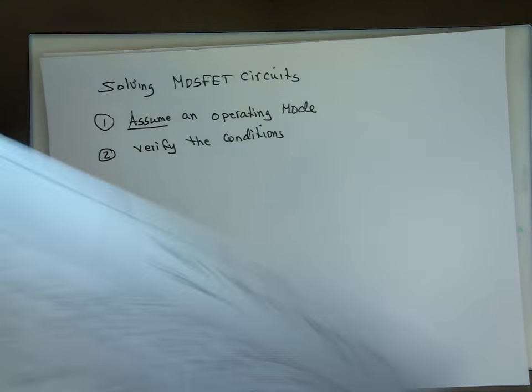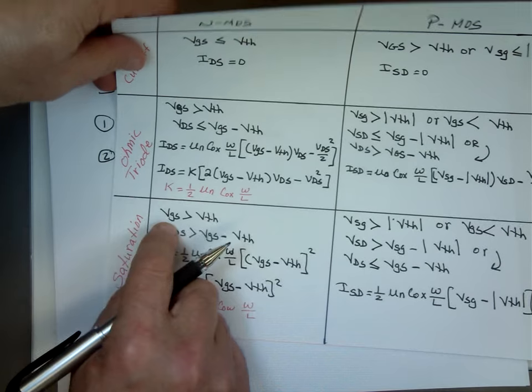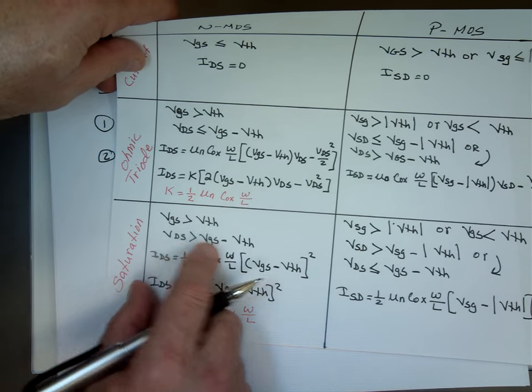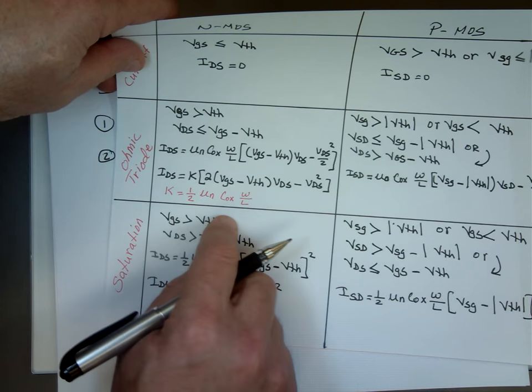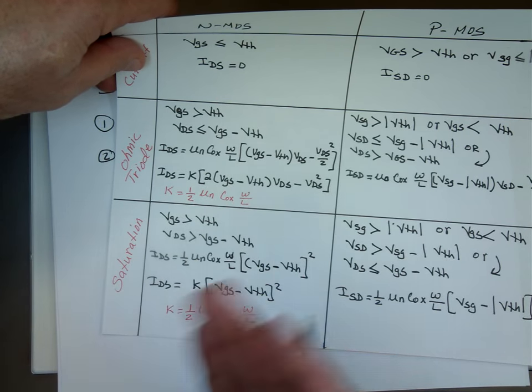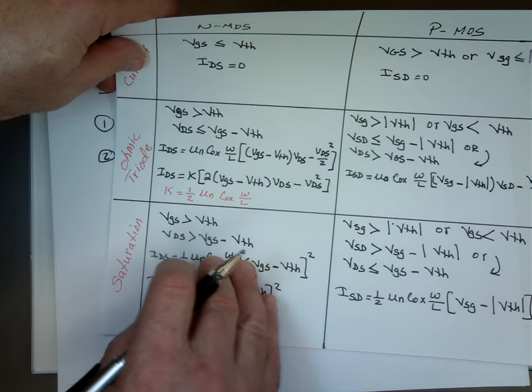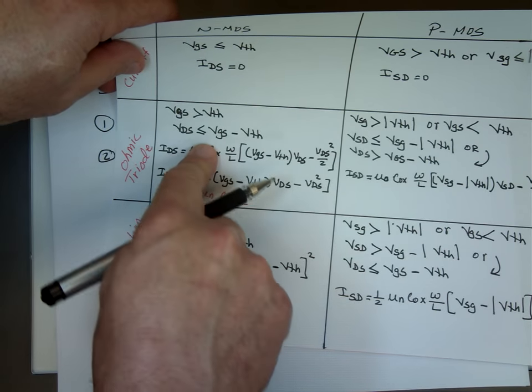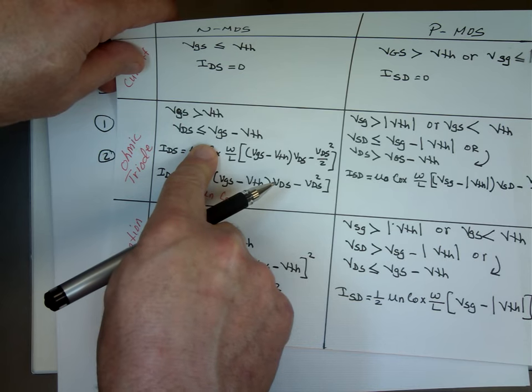Meaning what? If I said I'm in saturation, is VGS bigger than the threshold voltage? And is VDS bigger than VGS minus VT? If the answer is yes and yes, my assumption is correct. If my answer is no, well maybe it's not in saturation. Let me try to assume it's ohmic region. But I have to verify these values.